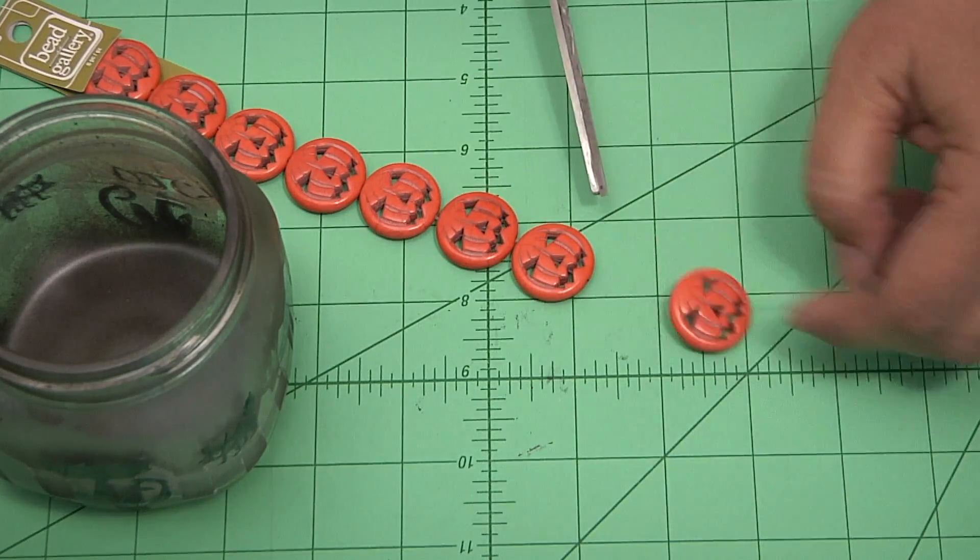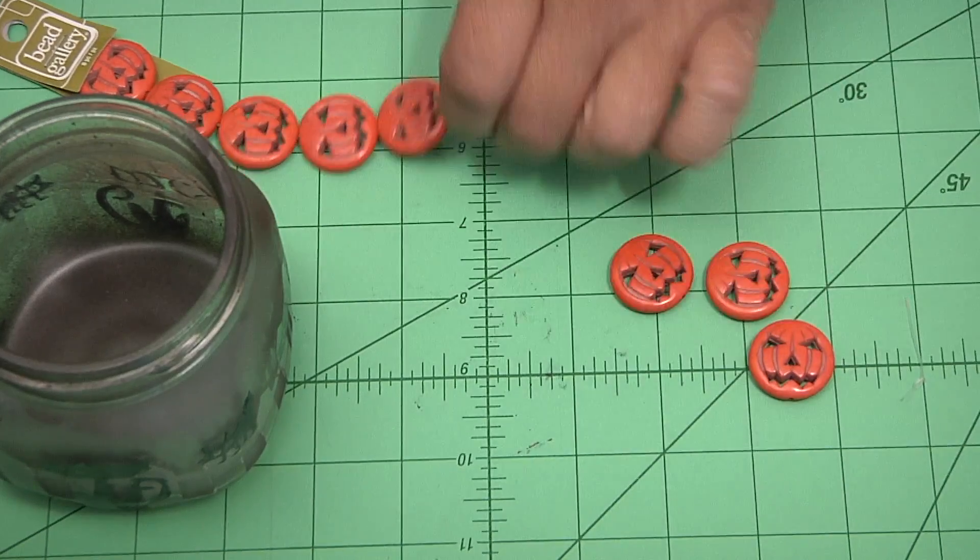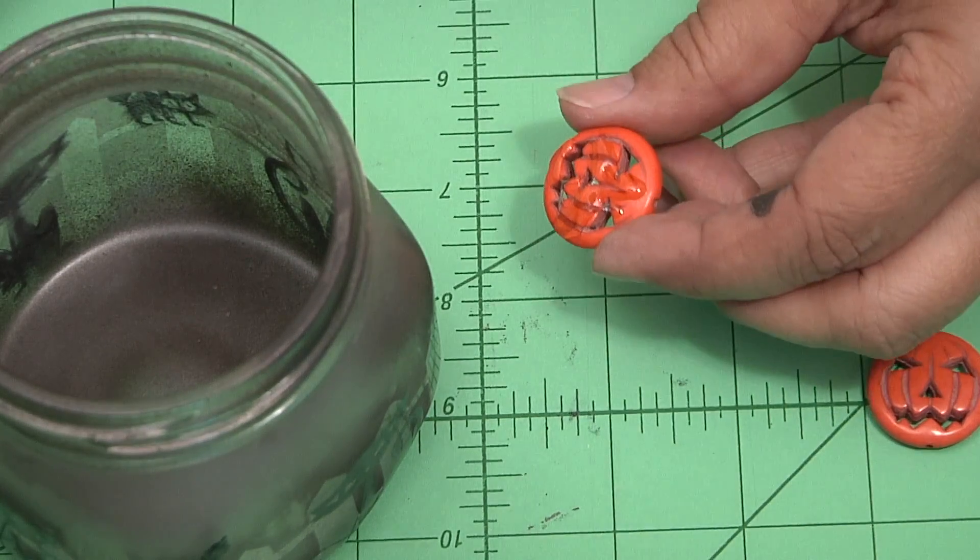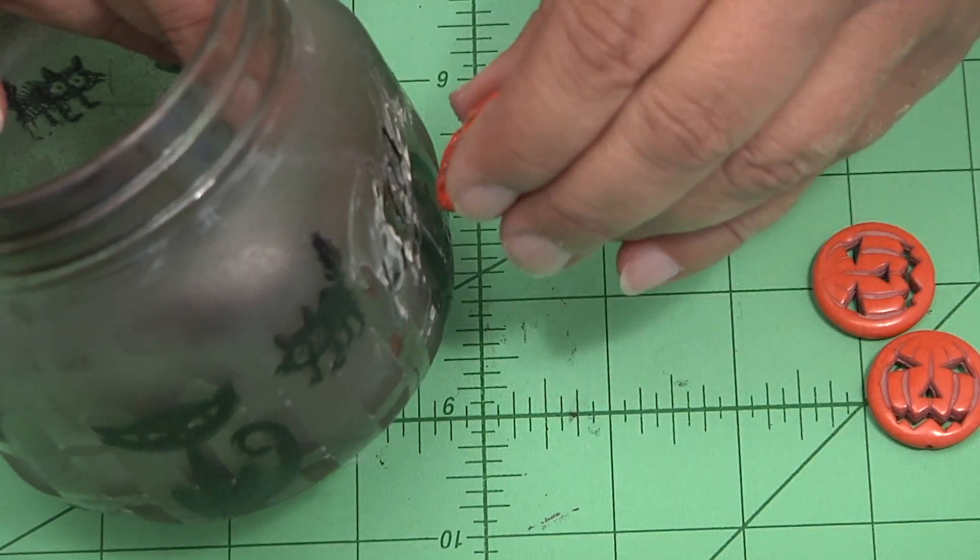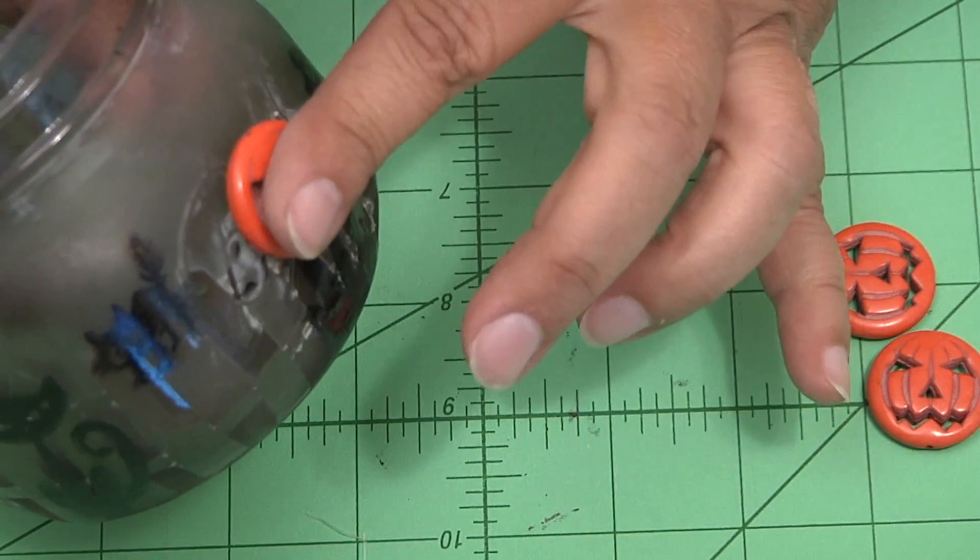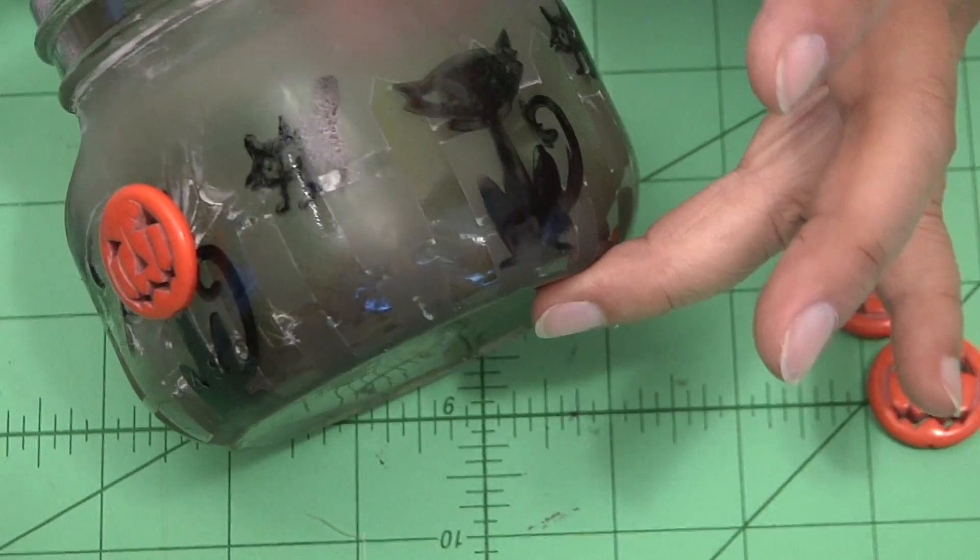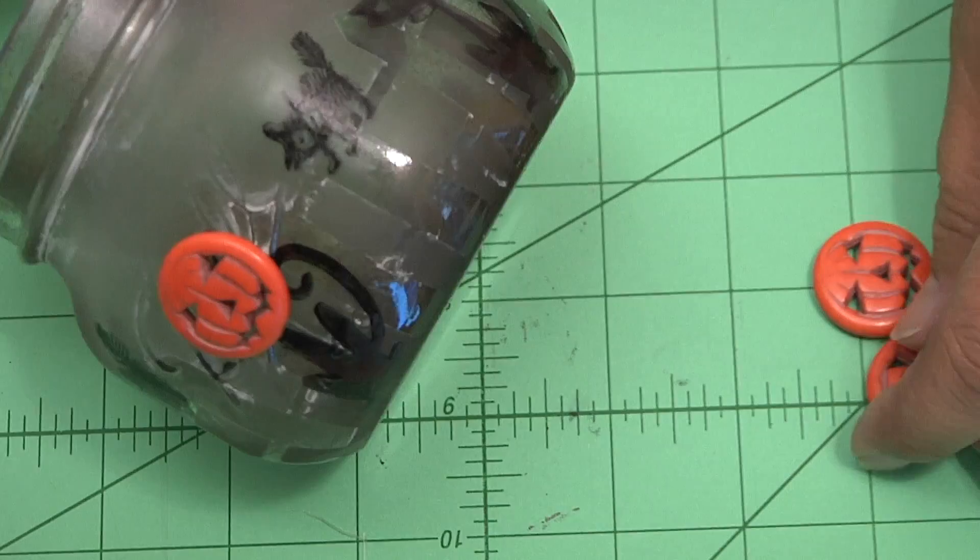When I stamped the cat over the word ball on the jar, it didn't stamp its head. So I had these great little Halloween pumpkin beads. So I just went ahead and glued one right over the top of the head of the cat. I think it gives it a little extra humor. You do need to let that dry overnight for a little while.